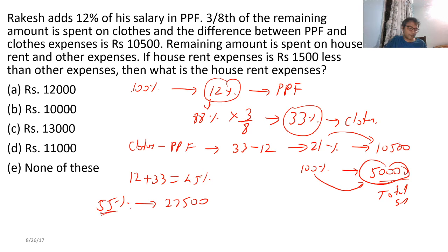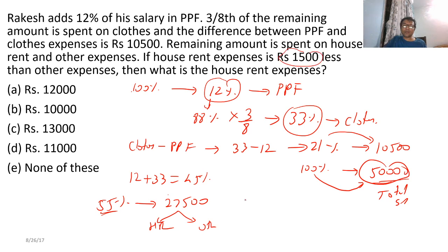55% of ₹50,000 is ₹27,500. House rent expenses are ₹1,500 less than other expenses. So remove ₹1,500 from ₹27,500, leaving ₹26,000. Divide ₹26,000 equally between house rent and others — each gets ₹13,000. House rent is ₹13,000 and others are ₹13,000 plus ₹1,500 = ₹14,500.